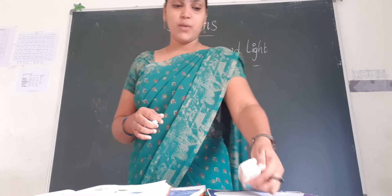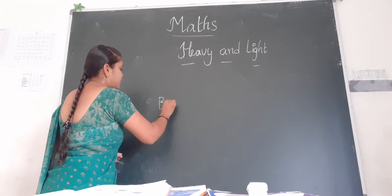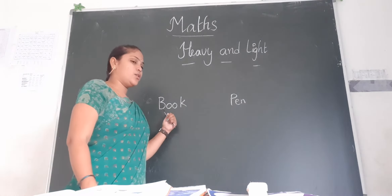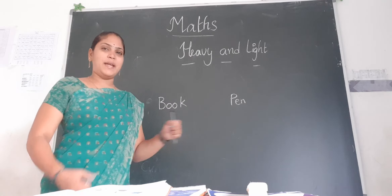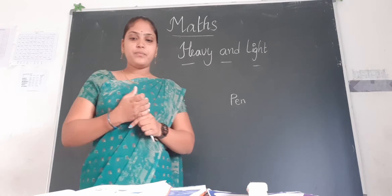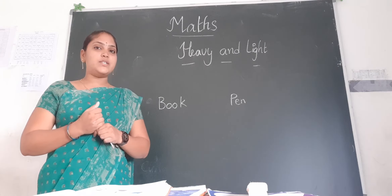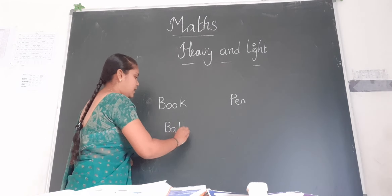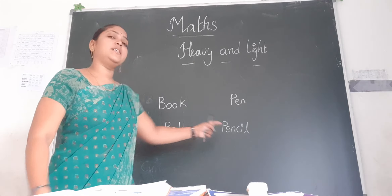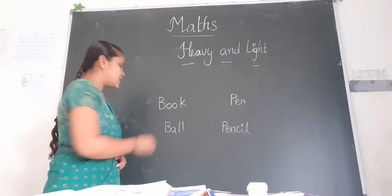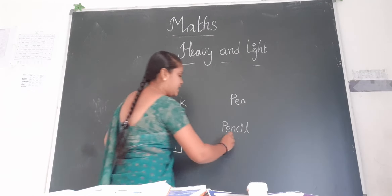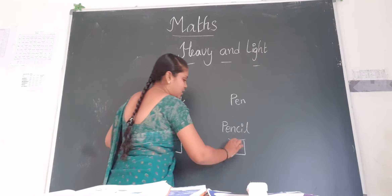Now I will ask one by one children. Book and pen — in these two, which one is the heavier object? Book is the heavier object. Is pen the heavier object? No. Book is the heavier object. Next — ball and pencil. In these two objects, which one is heavier? Ball is the heavier object and pencil is the lighter object. Put a tick mark near the heavier object and a tick mark near the lighter object.